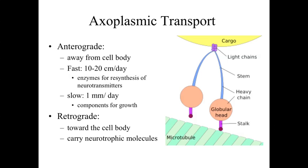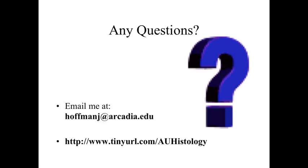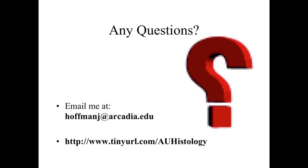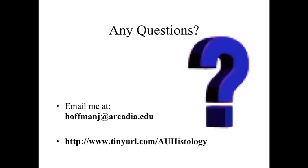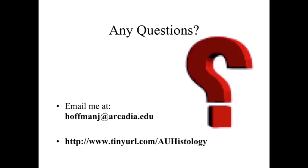This mechanism of fast and slow axoplasmic transport allows materials needed by the tips of the axons to be transported in an organized way, since diffusion alone is not sufficient over such distances. That concludes our overview of nerve cells. In the next mini lecture, we'll look at the supporting cells, ending part one of the lectures on the nervous system. Questions can be directed to hoffmanj at arcadia.edu.